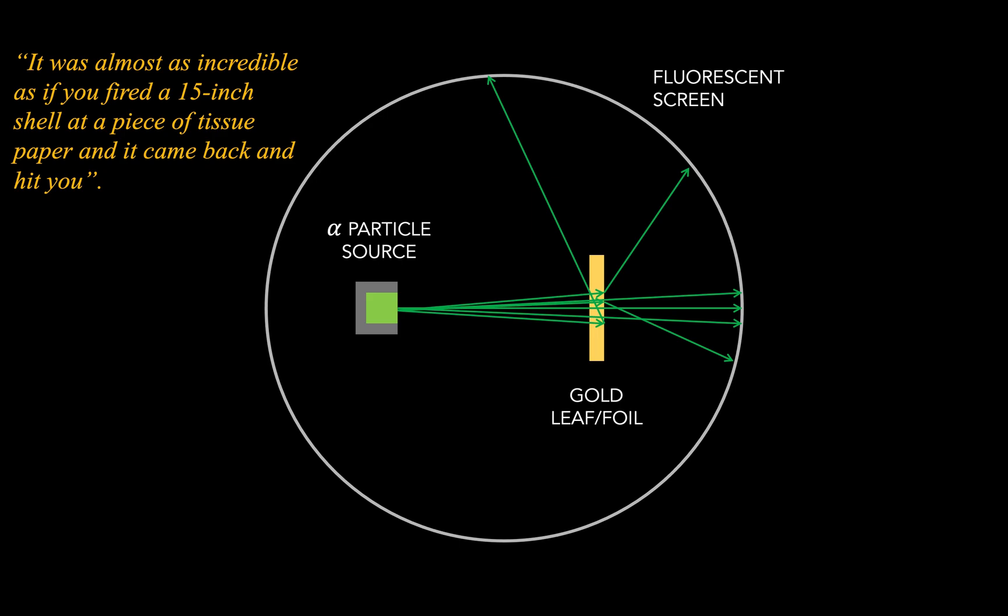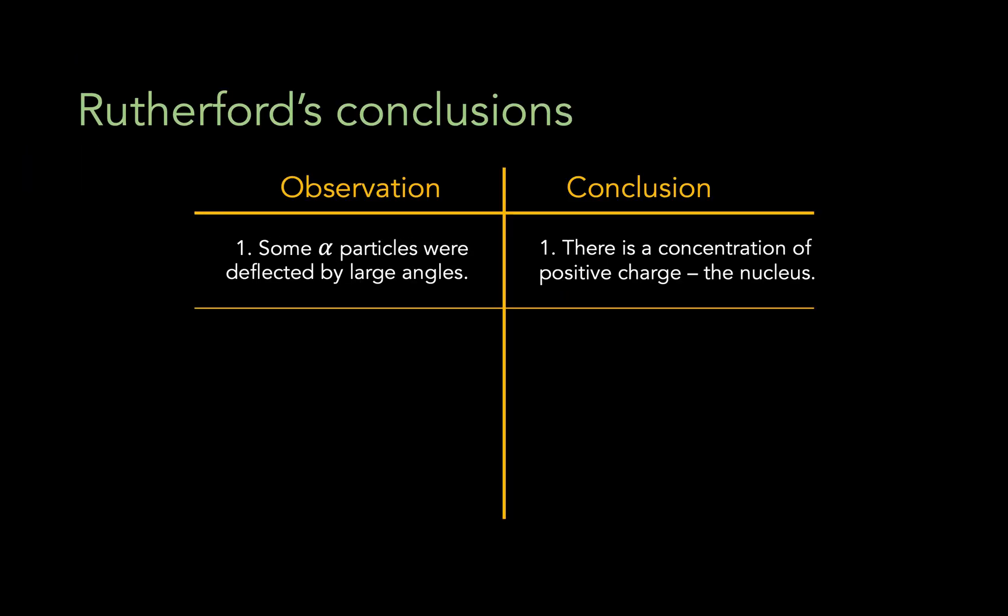Now, these strange results did force Rutherford into some pretty revolutionary conclusions. So first, the fact that the alpha particles were deflected by some large angles meant that there must be some concentration of positive charge in the atom, called the nucleus. If the positive charge were distributed uniformly, as in the plum pudding model, you wouldn't get the concentration of charge necessary to deflect the particles by such large angles.